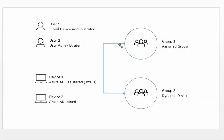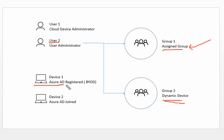Based on the question, here is a diagram summary. Group one is an Assigned group where you can add or remove users, and the owner is user two. Group two is a Dynamic Device group where devices are added based on their attributes, and the owner is also user two. Device one is Azure AD registered — likely a personal device — and device two is Azure AD joined — the organization's device.